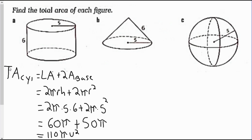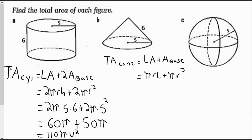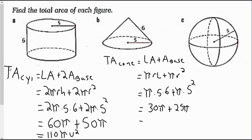For part b, I have a cone. The total area equals the lateral area plus the area of the base: πrl + πr². That equals π(5)(6) + π(5²) = 30π + 25π = 55π. So the area of this cone is 55π units squared.